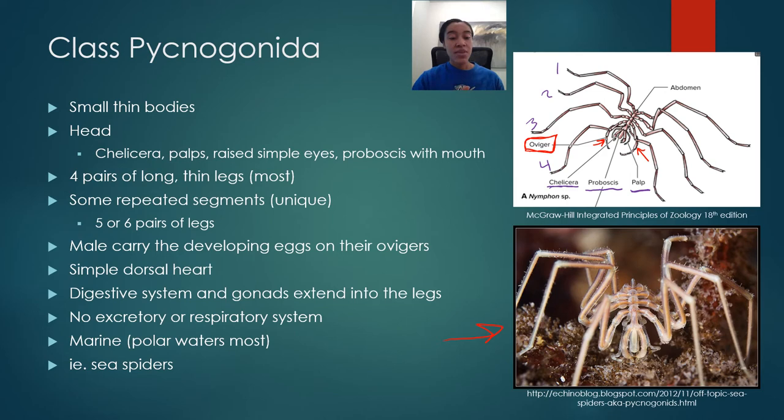Sea spiders are aquatic and live mostly in marine environments, thriving particularly in polar waters. They can live in various areas but do especially well in cold water at the poles.